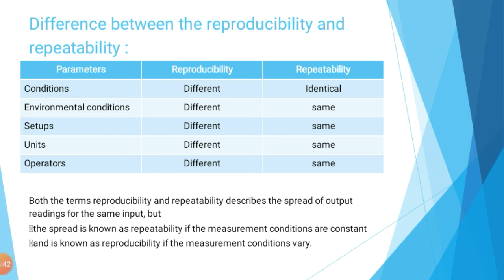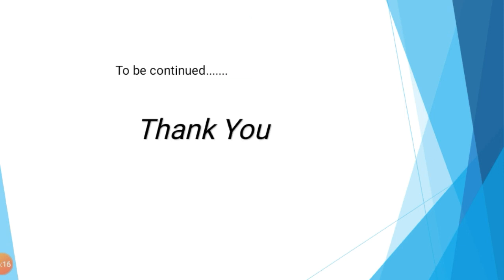In this video, we have seen six parameters of the sensor that help us describe and study its performance: accuracy, precision, sensitivity, linearity, reproducibility, and repeatability. In the next video, we will see the remaining parameters.